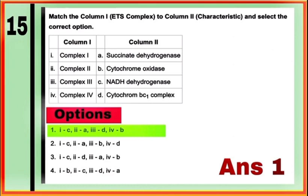Question 15: column one has got different complexes involved in electron transport system and column two has the names of these complexes, and you have to match the two.